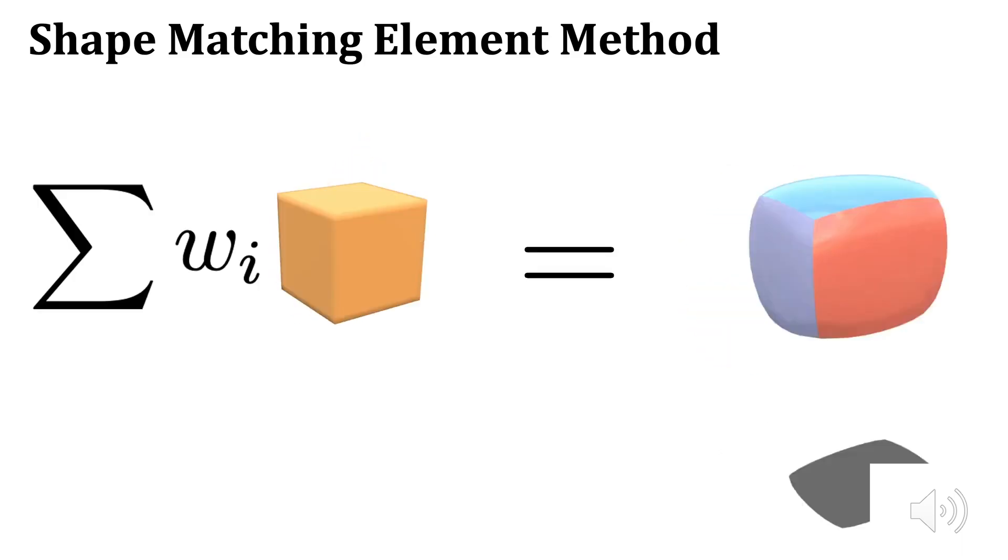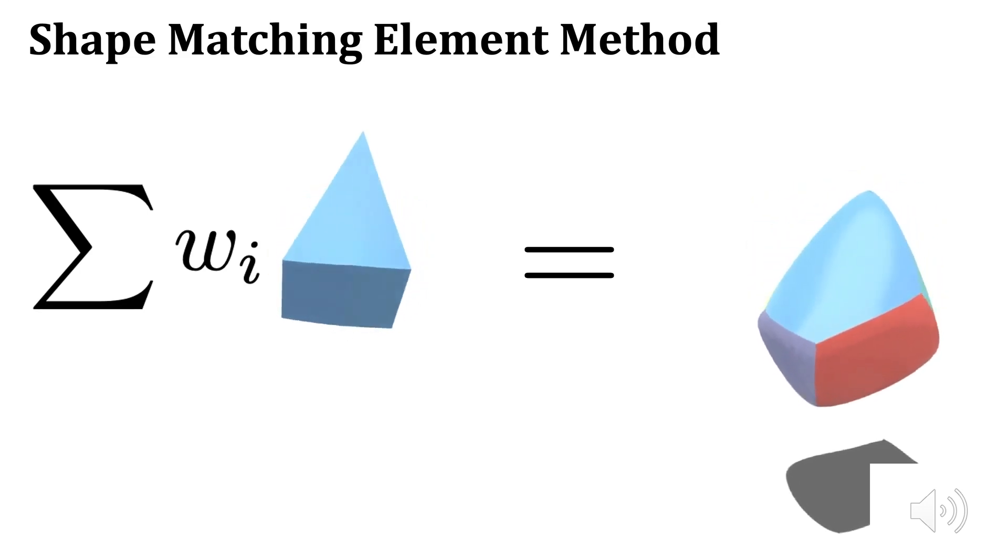We note that each shape matching polynomial serves the same purpose as a finite element shape function, extending the deformation of a local part of our model into the volume. Hence, we call it the shape matching element method.